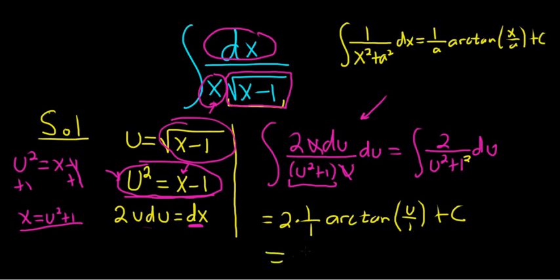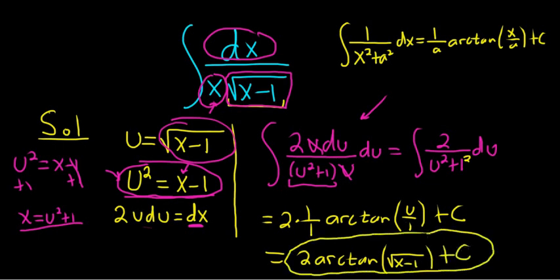So the final answer will be 2 arctangent, and then u here is the square root of x minus 1 over 1, so it's just that, plus our constant of integration c, really, really cool problem.